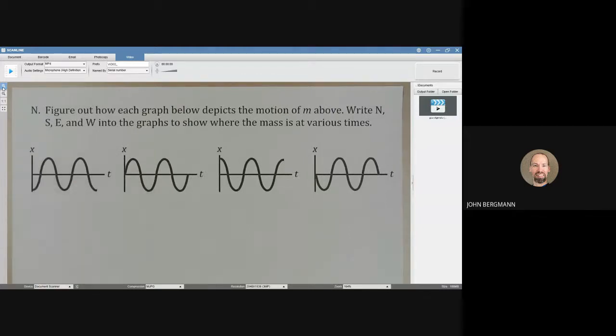And here we have position time graphs. These are sine curves. And that is going to show us what the x coordinate is doing for a mass that's oscillating back and forth on a frictionless surface when it's connected to a spring.